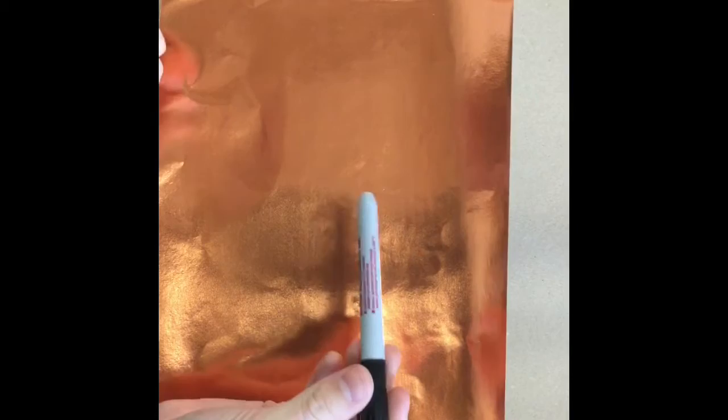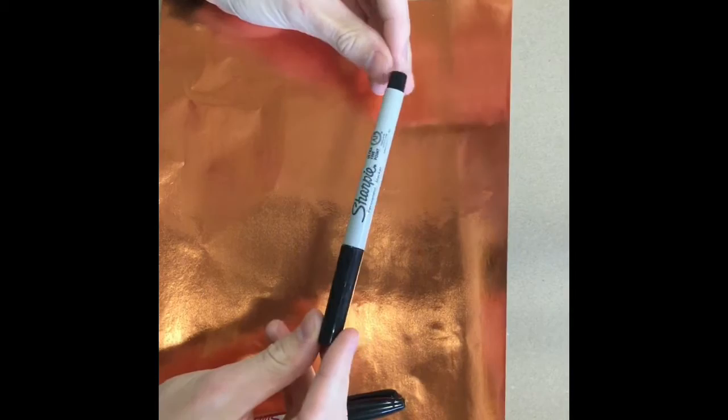From the supply table you're going to grab one piece of metallic paper. You're also going to grab a Sharpie. I'm going to use a thicker Sharpie that way you guys can see the lines I'm drawing. You guys will use a thinner one.